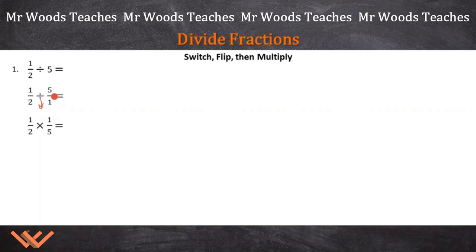See, that's why I put it into a fraction. With time, we'll just do that automatically. So now, once we have it here to where we're multiplying fractions, we multiply the top. So that's going to be 1 over, and then 2 times 5 is 10.